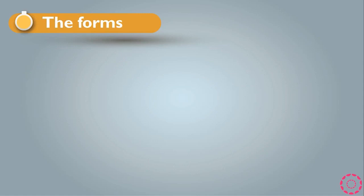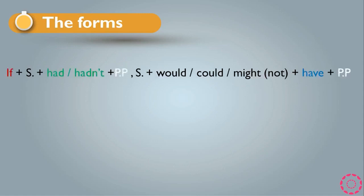We have the forms of the third conditional. If at the beginning, plus subject, plus had or hadn't according to the subject, plus past participle (PP), comma, then subject, and again with could or might if it is positive. If it is negative, we use not, and after that we have to use have, and again past participle (PP).